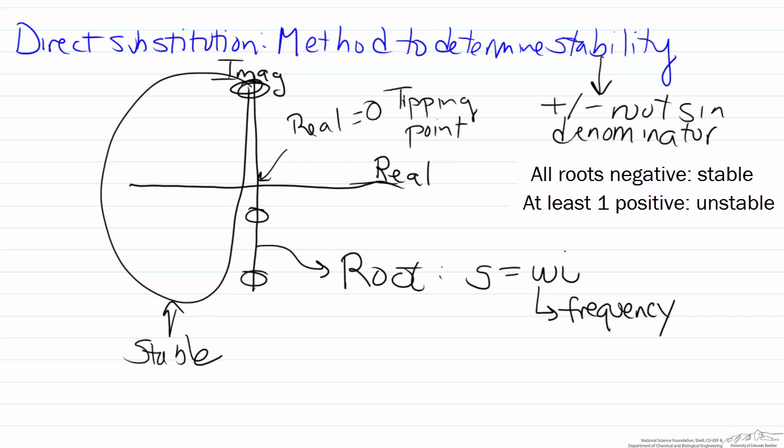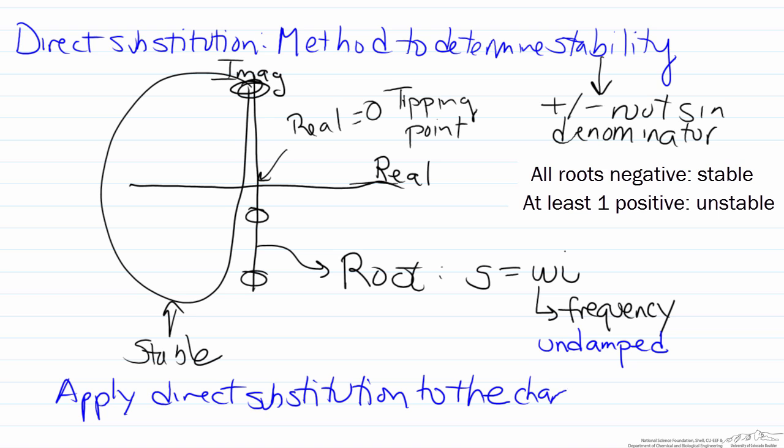If the real root is zero, what that means is that the response will typically be undamped, hence why we have the idea of the frequency. So what we do here is we apply direct substitution to the characteristic equation in order to analyze the system.